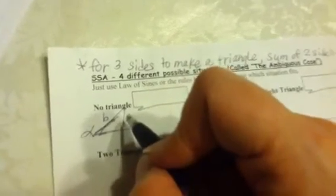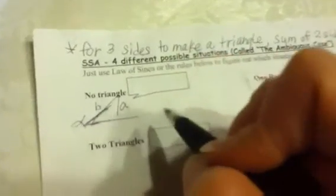So don't get too stuck on the letters alpha, A, and B, because they can be used for any letters. If A ends up being less than B sine alpha, then there will be no triangle. A will not be long enough to reach to make a triangle, just like we were talking about here.